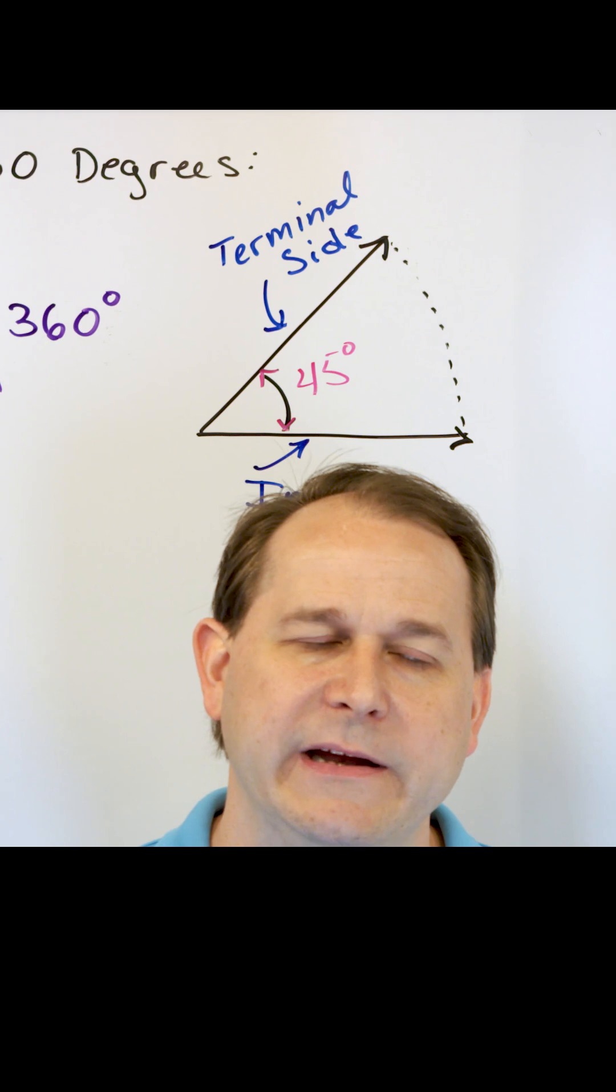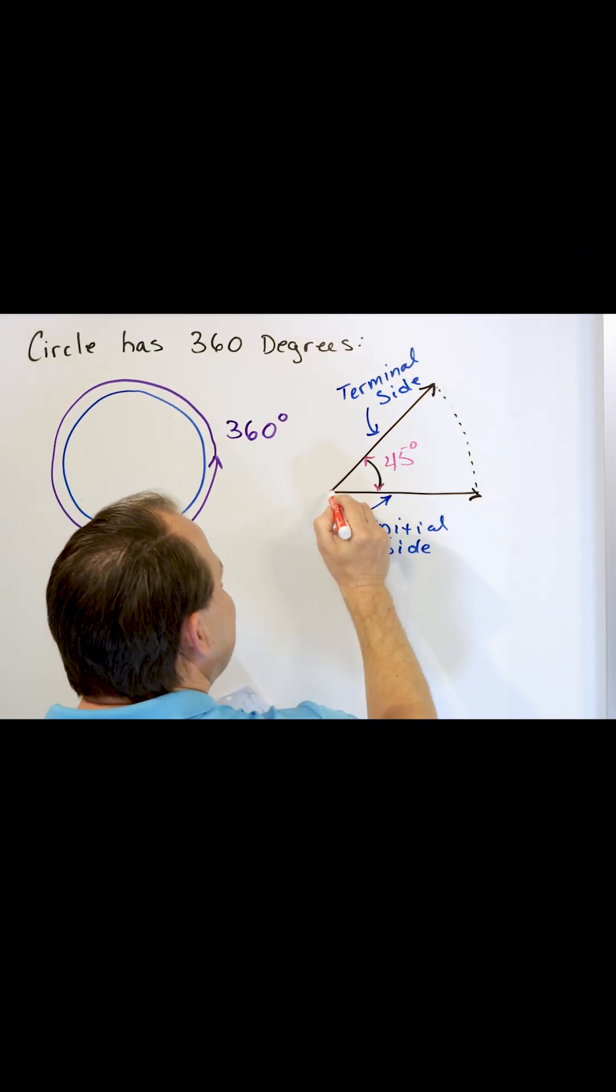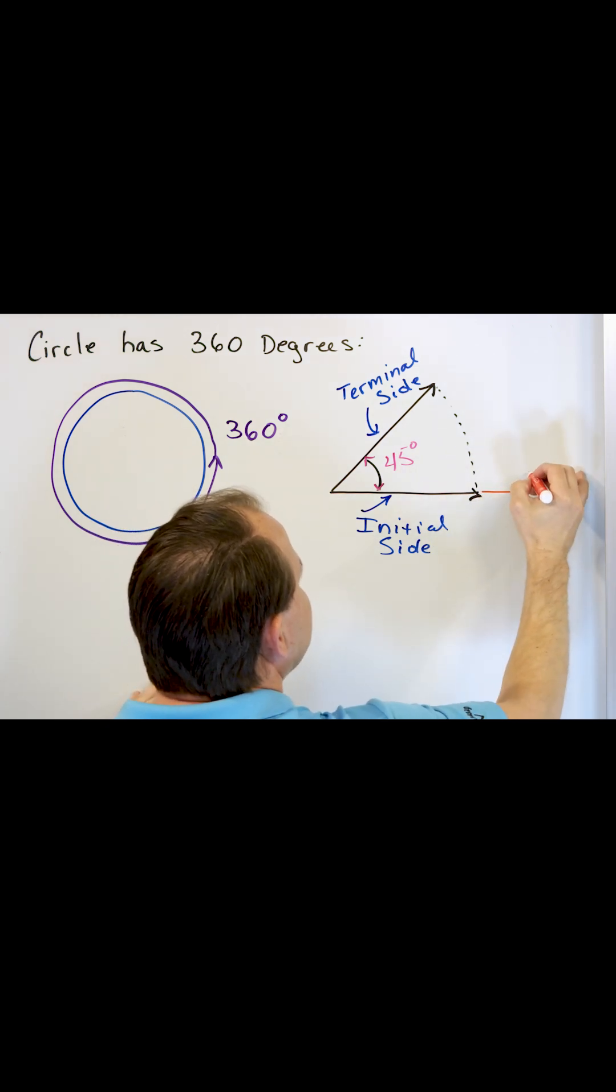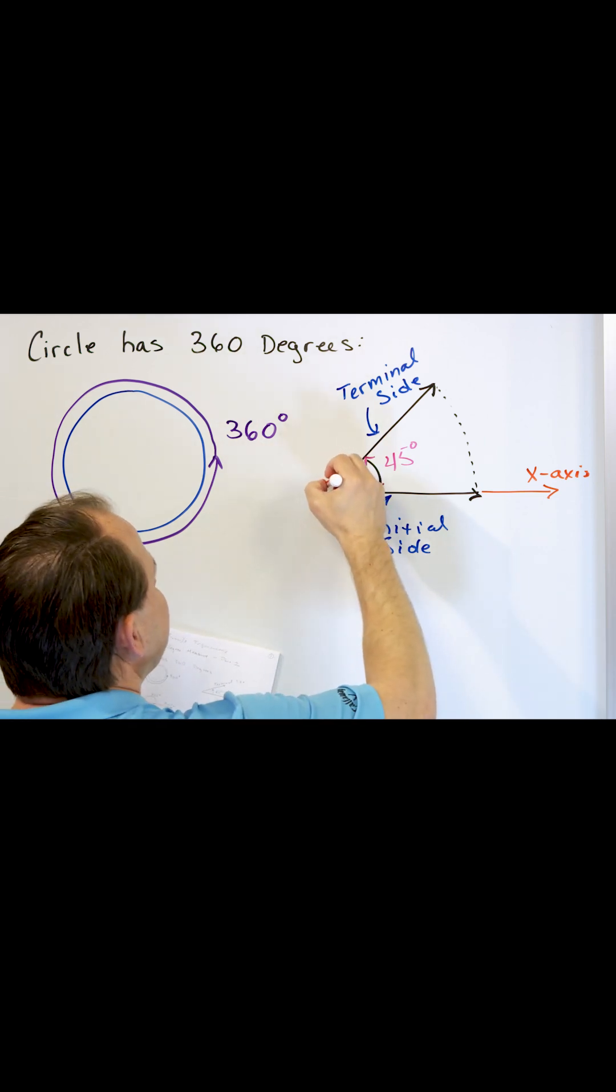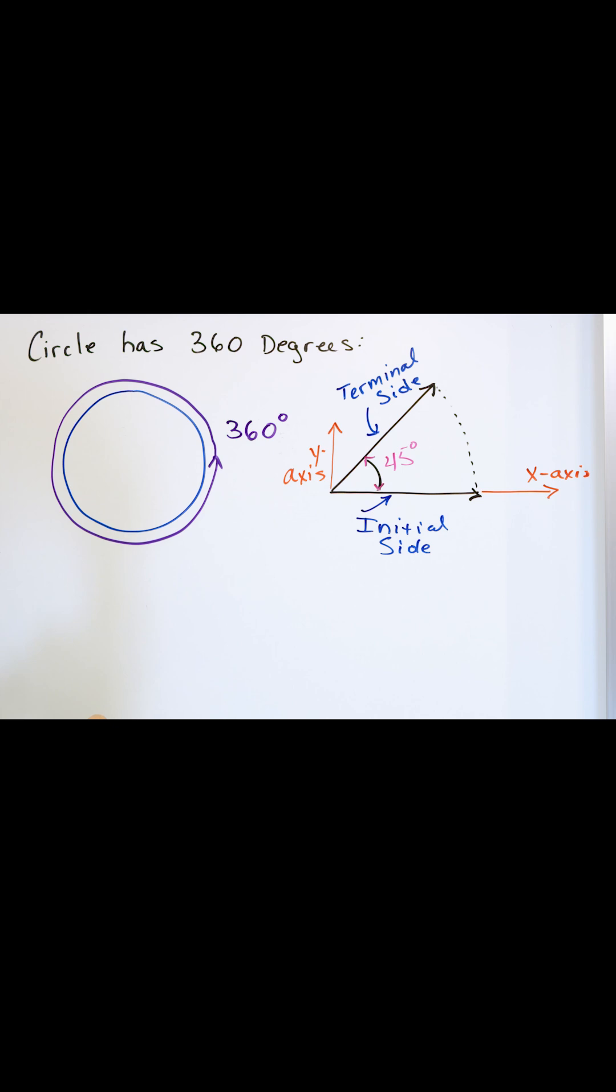What I mean by that is this: imagine that this is an XY plane and the x-axis actually continues on here. So this is the x-axis, right? And you can imagine this part right here would be the y-axis, something like this.